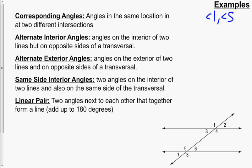Alternate interior angles — you've got to break it down: alternate and interior. These are two angles on the interior of two lines, but on opposite sides of the transversal, which is what cuts through those two lines. So angle 3 is on the inside, and on the opposite side of the transversal would be angle 6. So 3 and 6 are alternate interior angles. Also 4 and 5. Those are congruent.